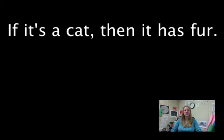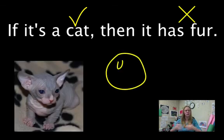There's a special kind of statement called an if-then statement that we have to have a specific kind of counter example for. So if it's a cat then it has fur. That means that to prove that statement wrong we need something that's a cat but doesn't have fur. So we need one of those little hairless cats like this. So that would be a good counter example for our statement.